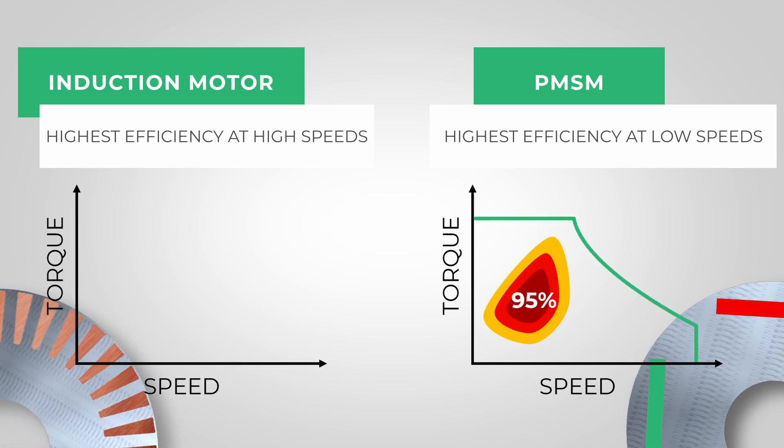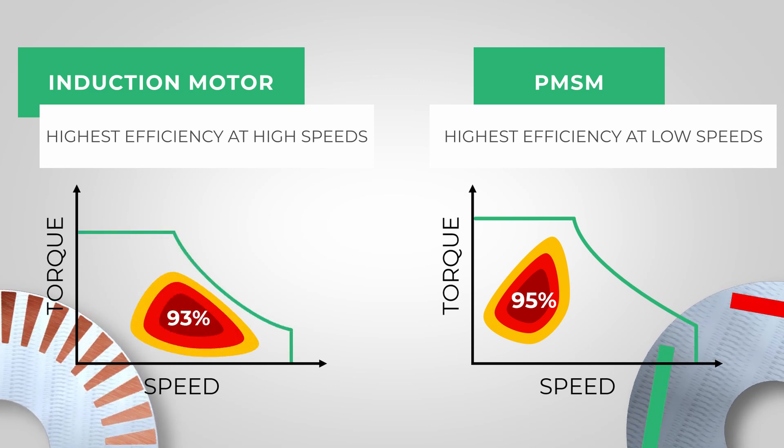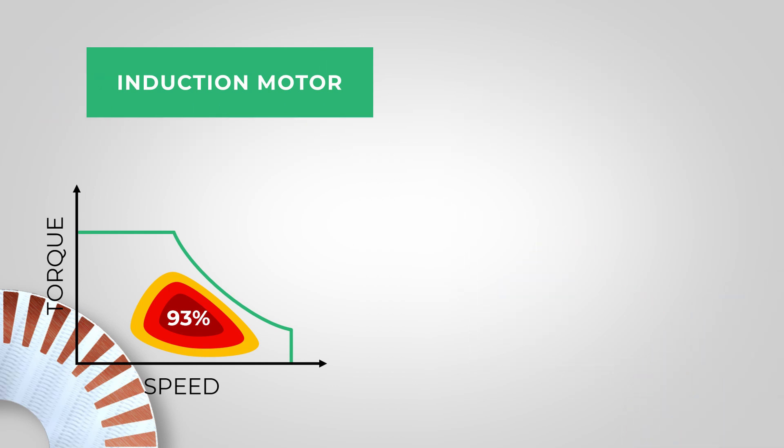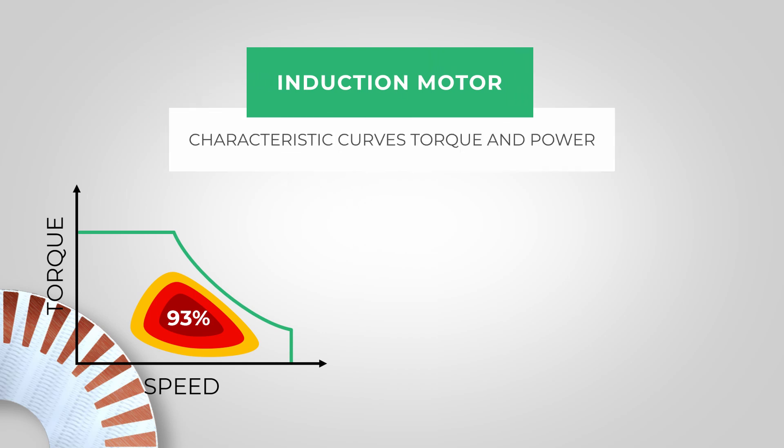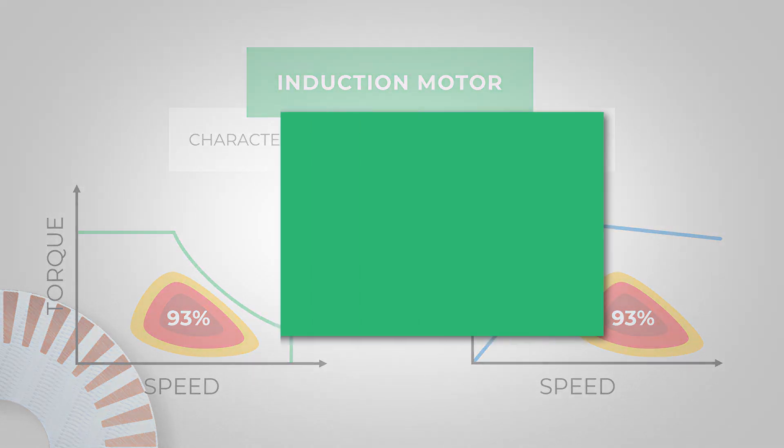However, induction motors achieve a slightly better efficiency at high speeds compared to a conventional PMSM. This is because an additional current is needed for the PMSM to weaken the magnets in the higher speed range. But exactly at high speeds, a very good efficiency is very important because here the power or the energy consumption is very high.